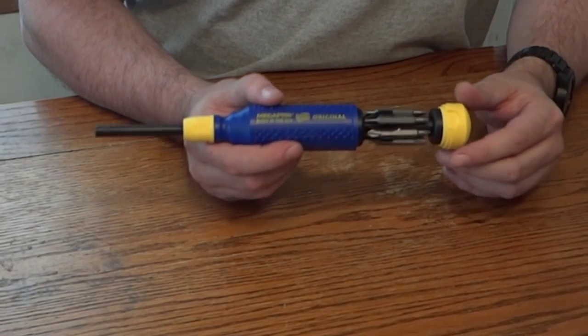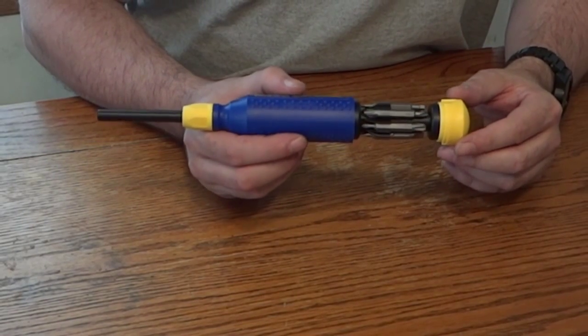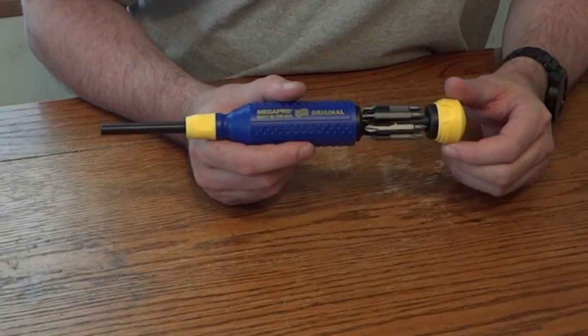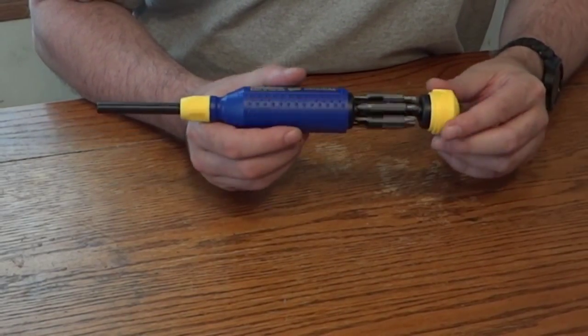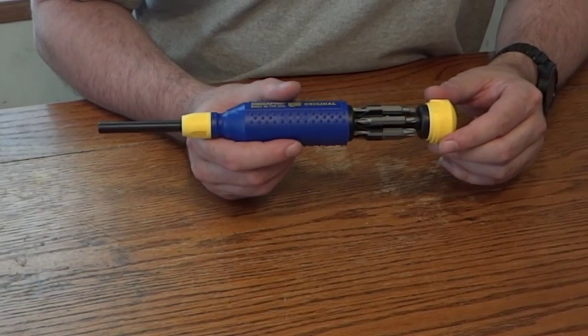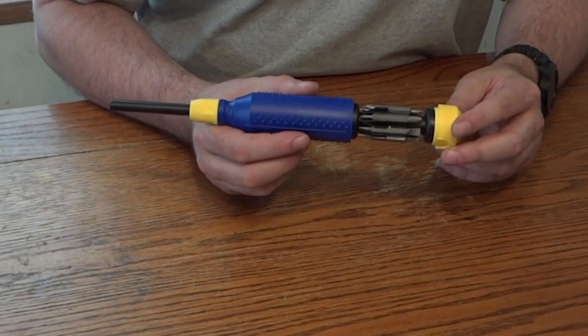So they'll cover pretty much every aspect of household repair that you'd need to cover and you never know when you need a Robertson or a Torx bit so it's good to have these guys tucked away in here for the times that you actually do need them.